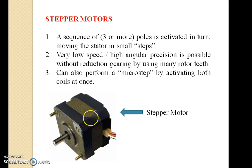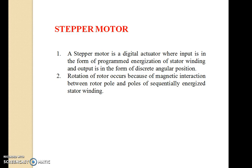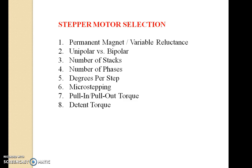The stepper motor works by activating a sequence of three or more poles in turns, moving the stator in small steps. Very low speed and high angular precision is possible without reduction gearing by using many rotor teeth; it can also perform microsteps by activating both coils at once. The stepper motor is a digital actuator where the input is in the form of programmed energization of stator winding and the output is in the form of discrete angular position. Rotation of the rotor occurs because of magnetic interaction between rotor poles and sequentially energized stator winding poles. Selection criteria include permanent magnet or variable reluctance, unipolar or bipolar, number of phases, degrees per step, microstepping, and torque.